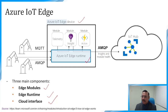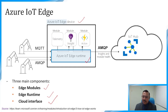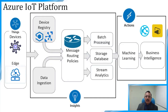IoT Edge hub optimizes the actual connections made to the cloud by taking logical connections from modules or downstream devices and combining them into a single physical connection to the cloud, so clients think they have their own connections. IoT Edge hub can use AMQP or MQTT to communicate upstream to the cloud independently from protocols used by downstream devices. If the connection to the cloud is lost, IoT Edge hub saves messages and updates locally, and once the connection is re-established, it syncs all the data.